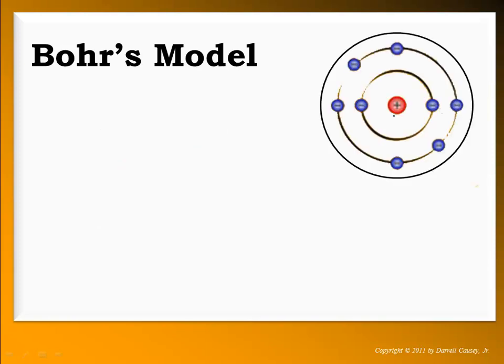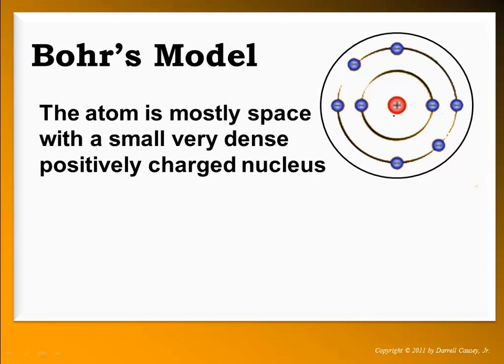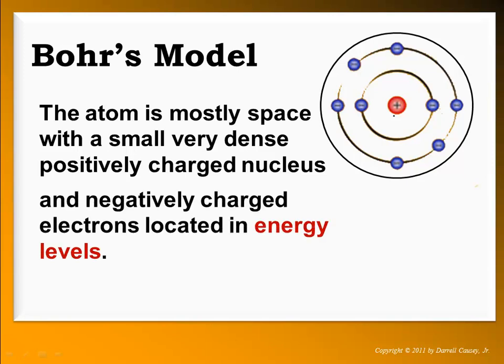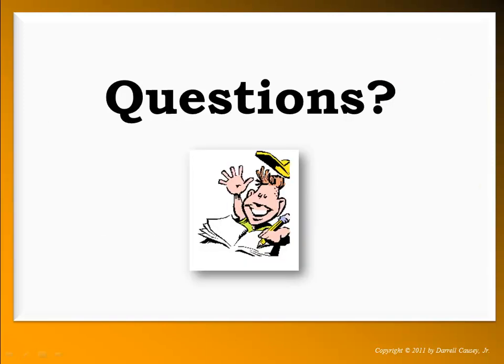Bohr's model states that the atom is mostly space with a very dense, positively charged nucleus, and negatively charged electrons located in energy levels, which he called orbits. He saw it as very similar to our solar system, and that's why we call it the planetary model.